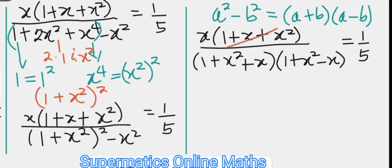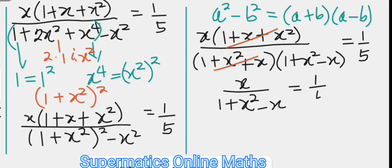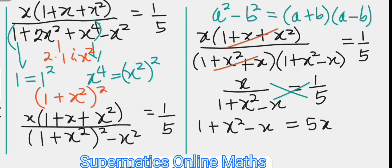The factor (1 plus x plus x squared) cancels out, leaving x over (1 plus x squared minus x) equals one over five. Applying the cross product property, we have 1 times (1 plus x squared minus x) equal to 5 times x, giving 1 plus x squared minus x equals 5x.